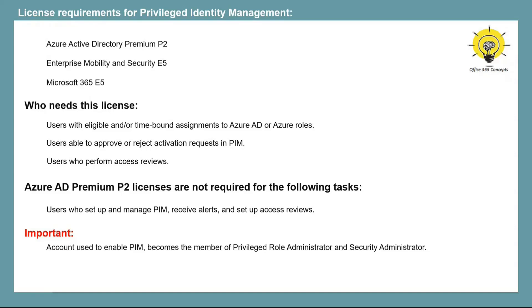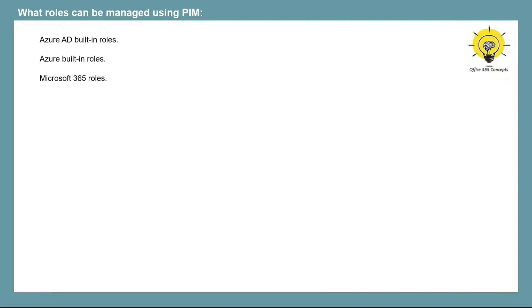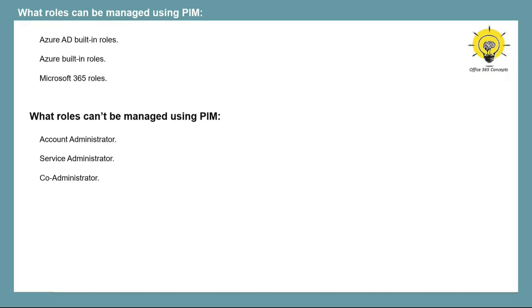Now let's move to the last topic of this video. Using Privileged Identity Management, you can manage all Azure Active Directory roles, Azure roles, and Microsoft 365 roles like Exchange Administrator, SharePoint Administrator, or Intune Administrator. However, using PIM, you cannot manage roles like Account Administrator, Service Administrator, or Co-Administrator.